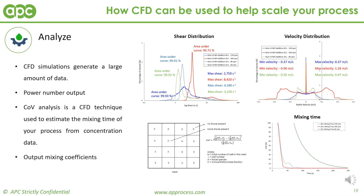CFD simulations generate a large amount of data. Harnessing this data can provide useful insight into your process. The graphs show shear and velocity distributions throughout the vessel with percentage volume on the y-axis. CFD provides a power number unique to your system, calculated from the moment on the impeller blades from the central shaft. The macromixing time can also be determined using the COV technique, which works by introducing dye and determining the time required for the system to reach uniform concentration.